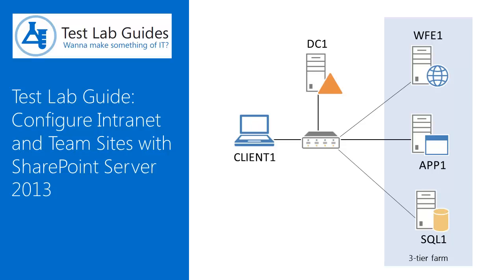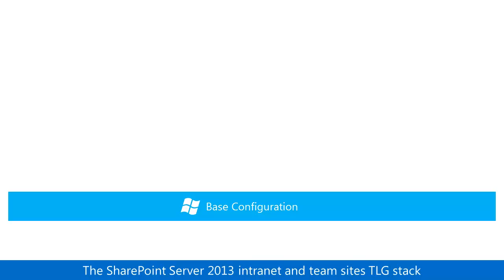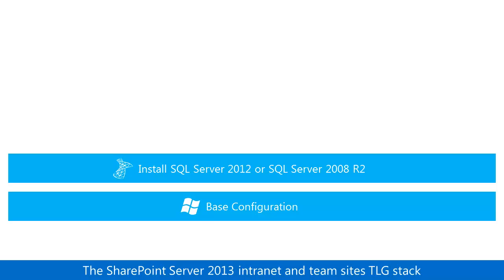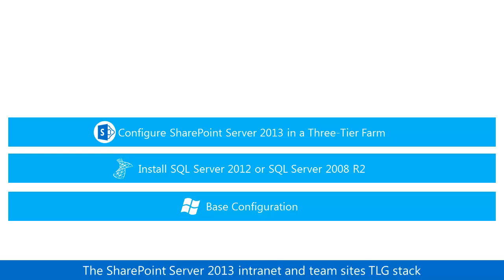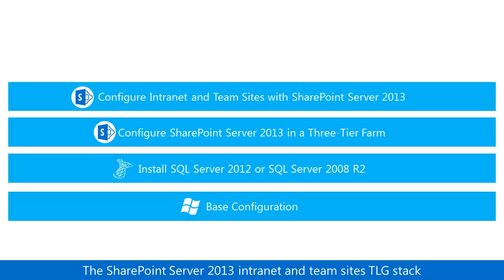Let's step through the Test Lab Guide for Configuring Intranet and Team Sites with SharePoint Server 2013. The SharePoint 2013 Intranet and Team Sites stack consists of the Base Configuration Test Lab Guide, or TLG, the SQL Server 2012 or 2008 R2 TLG, the 3-Tier Farm TLG, which creates the web, application, and database tiers of a SharePoint farm, and lastly the Configure Intranet and Team Sites TLG, in which you set up multiple web applications, site collections, and subsites for intranet departments and teams, and then verify them from a web client computer.